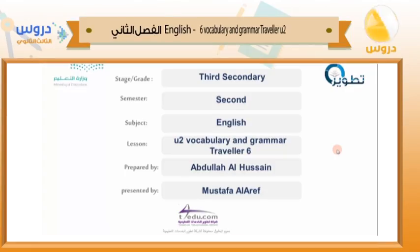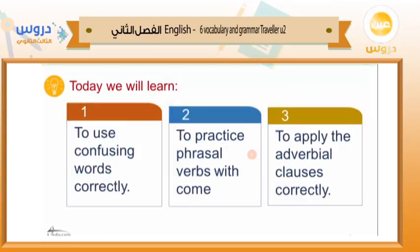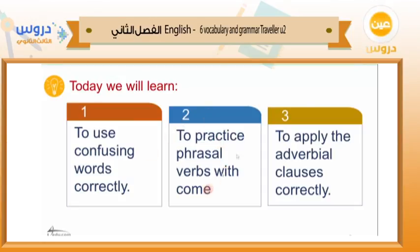Bismillah rahman rahim. Welcome, third secondary students, to the second semester of the Rules Online. Today for your English book, The Traveler 6, we have vocabulary and grammar. We will learn three objectives: one, how to use confusing words correctly; two, practice phrasal verbs with the verb 'come'; and three, to apply adverbial clauses correctly.